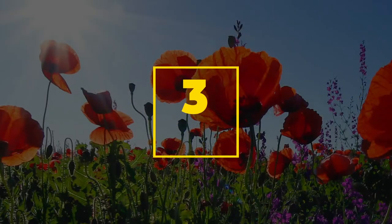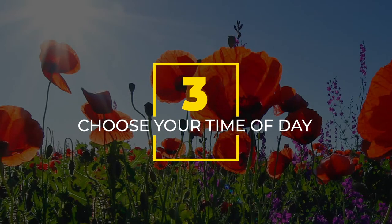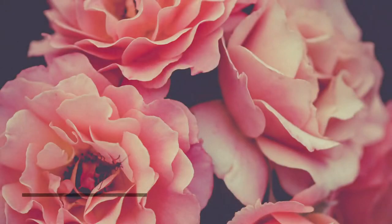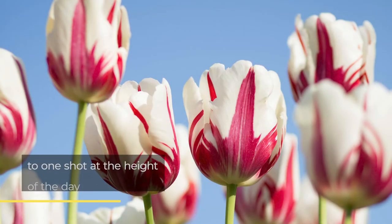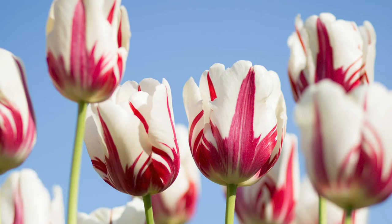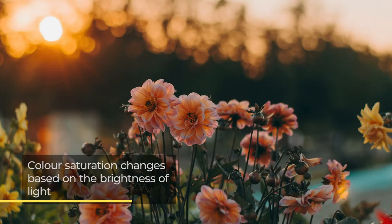Number three: choose your time of day. The time of day can set the character of your photographs. An evening photograph will give the photograph a different mood to one shot in the height of the day. Adding light to your photograph can reduce colour saturation, whilst taking light out — such as shooting in the evening — can increase colour saturation.